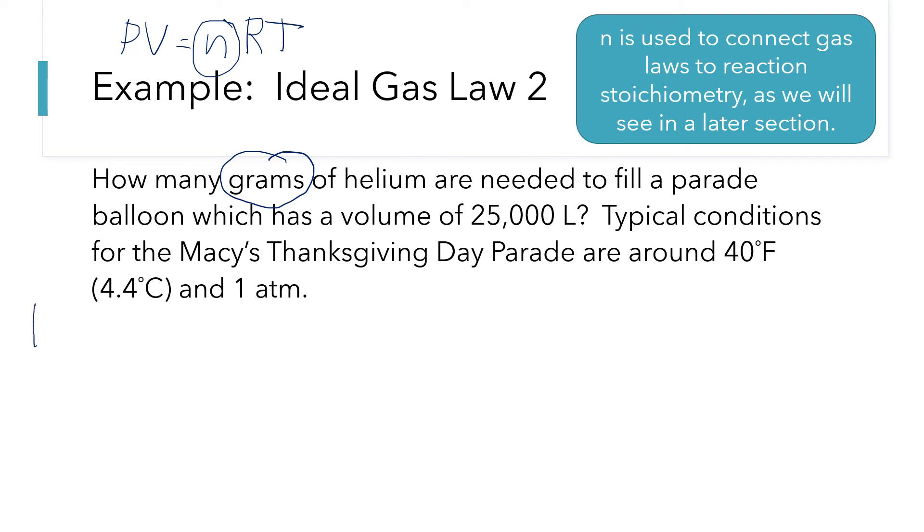So n is our unknown. So I'm going to start making a variable list down here. P equals, V equals, n equals, R equals, and T equals. All right. The pressure is about one atmosphere. The volume is given as 25,000 liters. N is our unknown, what we're trying to find.